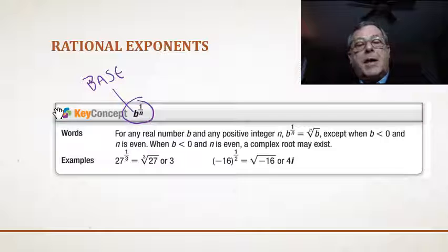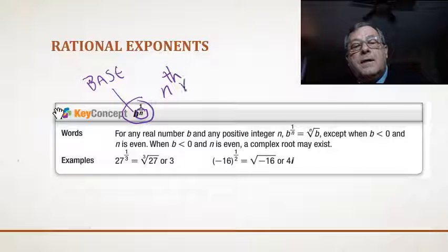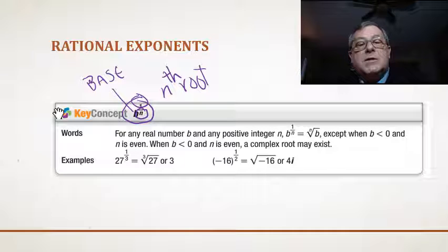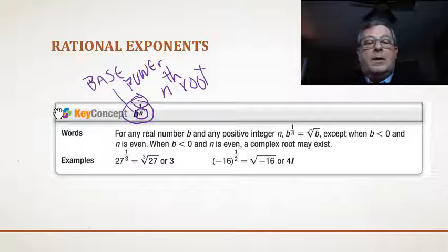Now, the denominator of this rational exponent tells us what root, or the nth root, that we're taking the base. And the numerator gives us whether the base is raised to a power. So, for any real number b and any positive integer n, b raised to the power of 1 over n is equal to the nth root of b.